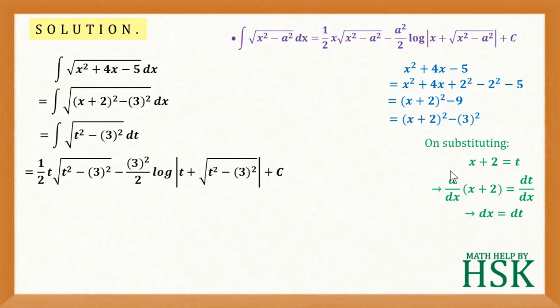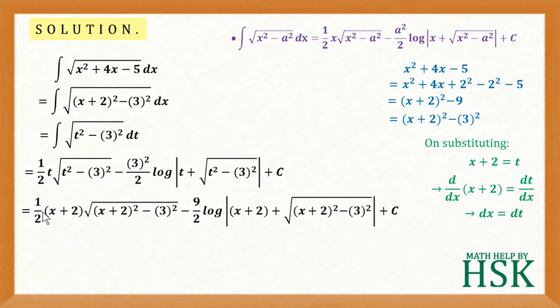Now on replacing the value of t as x plus 2, I am going to obtain this expression: 1 by 2 x plus 2 plus square root of x plus 2 whole square minus 3 square minus 9 by 2 log of x plus 2 plus square root of x plus 2 whole square minus 3 square plus c.